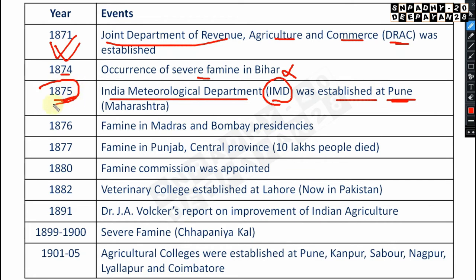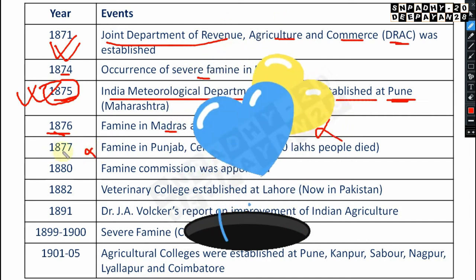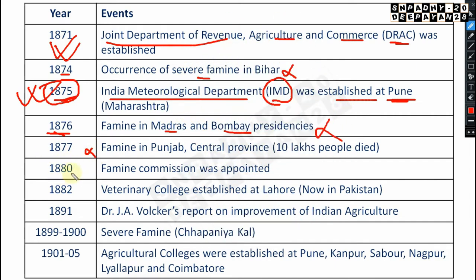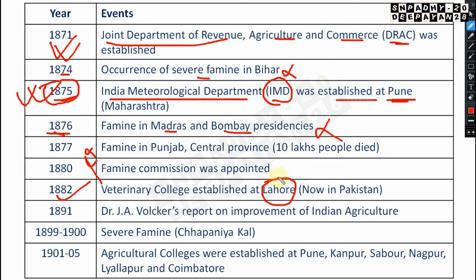In 1876, there was famine in Madras and Bombay Presidencies, and also famine in Punjab — not that important. In 1877, and then in 1880, the Famine Commission was formed — not that important. In 1882, a veterinary college was established at Lahore, which is now in Pakistan.